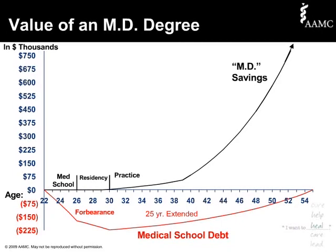Now let's look at the savings side. Suppose when she starts practice, Dr. Median saves about 2% of her annual salary every year for the first 10 years, from age 30 to 39. Then, at 40, she starts saving about 10% of her salary a year. This is what the savings line looks like. We're cutting off here at about age 52 when the balance is about $750,000, but it edges over a million by 55.